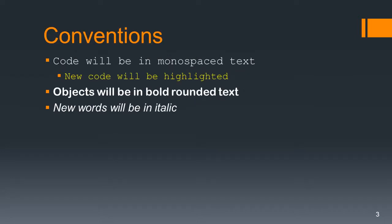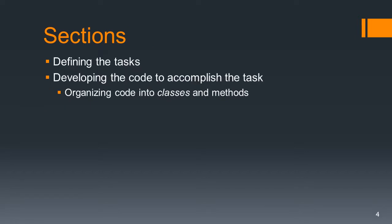The conventions in this slideshow will be like all the other ones. Code will be in monospace text. New code will be highlighted in yellow. Objects will be in bold, rounded text. And any new words I introduce will be in italics. The sections in this slideshow are: first we're going to define the tasks, and then we'll be organizing the code into classes and methods.